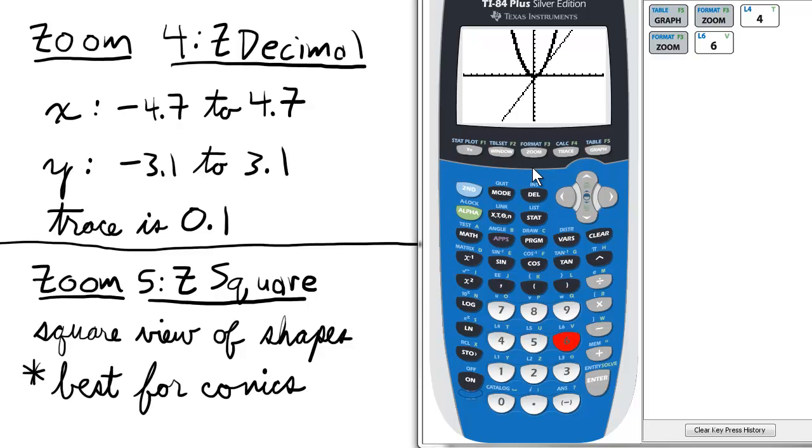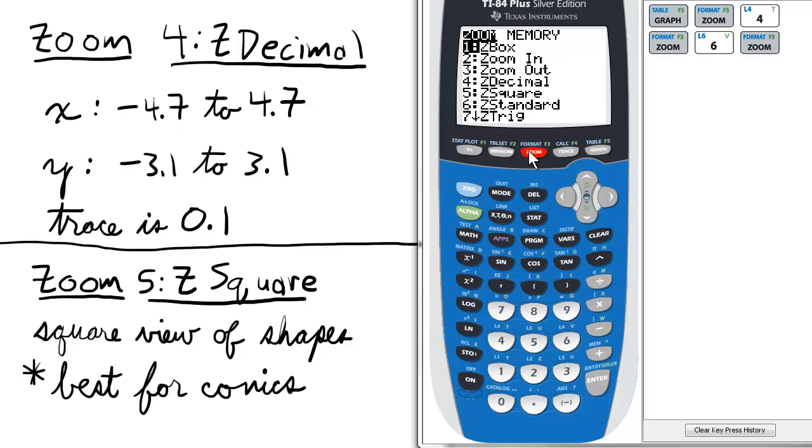Because if you notice the default of this, it looks like the x-axis is stretched out a bit because this viewing screen is wider than it is taller, much like a high-def TV. So let's go to zoom and select option 5 for Z Square.